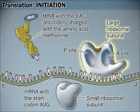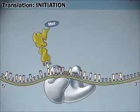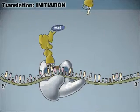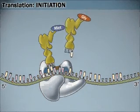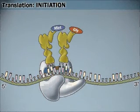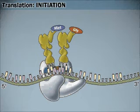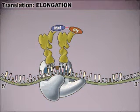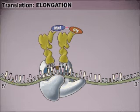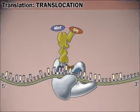Then the large ribosomal subunit joins. The second charged tRNA joins this complex, binding the appropriate codon. A peptide linkage forms between the two amino acids, and the first tRNA is released. The second shifts into the site formerly occupied by the first, and the third charged tRNA joins the complex.